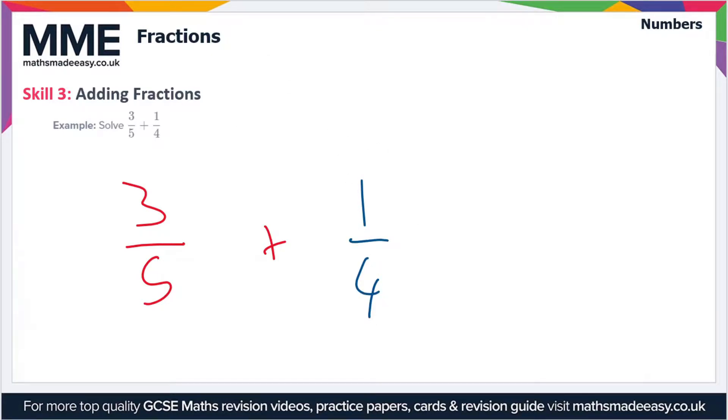So write it out nice and large. How do we add these two together? Well, we can't add the fractions together until they share a common denominator. In this case the denominators are different - we've got five and four - so we need to make these denominators the same. The way we do that is we multiply the numerator and the denominator of one fraction by the opposite denominator.